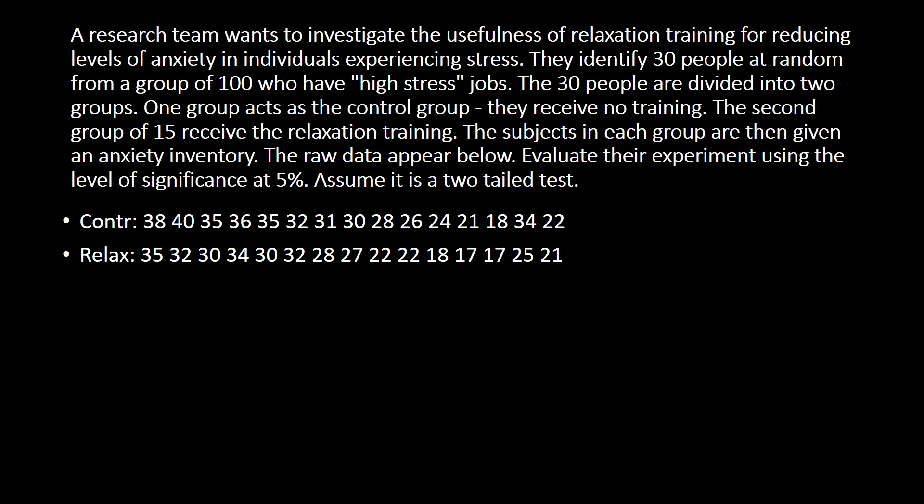Our problem here is: a research team wants to investigate the usefulness of relaxation training for reducing levels of anxiety in individuals experiencing stress. They identify 30 people at random from a group of 100 who have high-stress jobs. The 30 people are divided into two groups — one group acts as a control group receiving no training, and the second group of 15 receive the relaxation training. The subjects in each group are then given an anxiety inventory. Evaluate their experiment using a level of significance of 5%, and assume it is a two-tailed test.